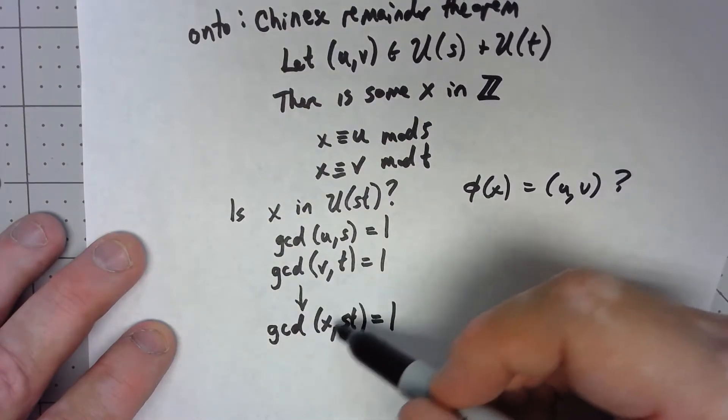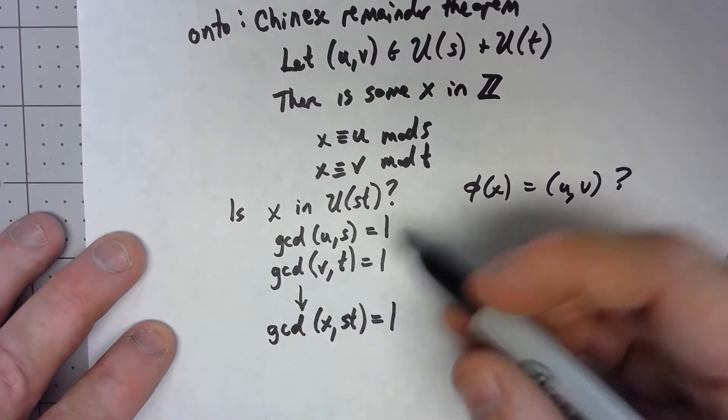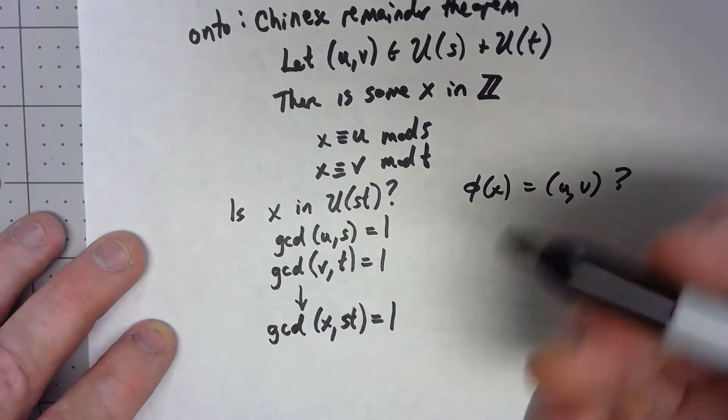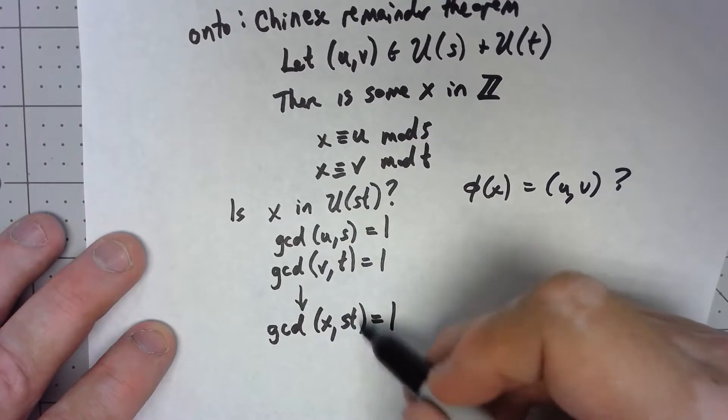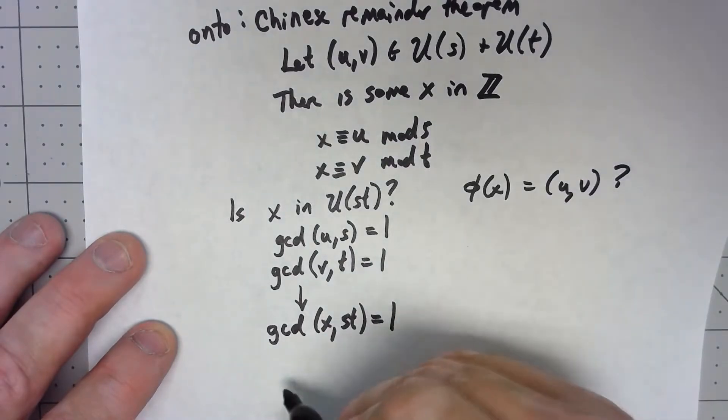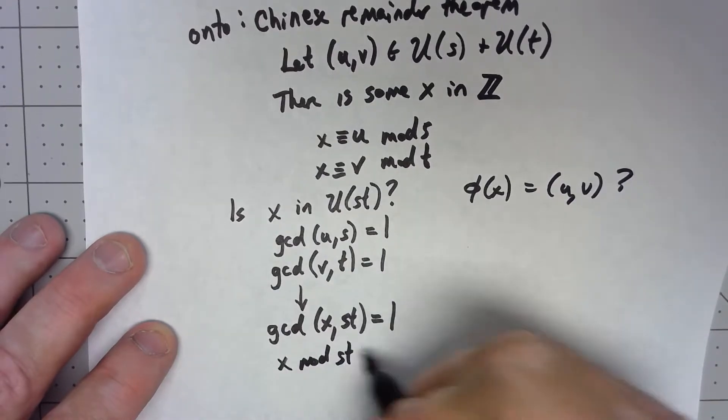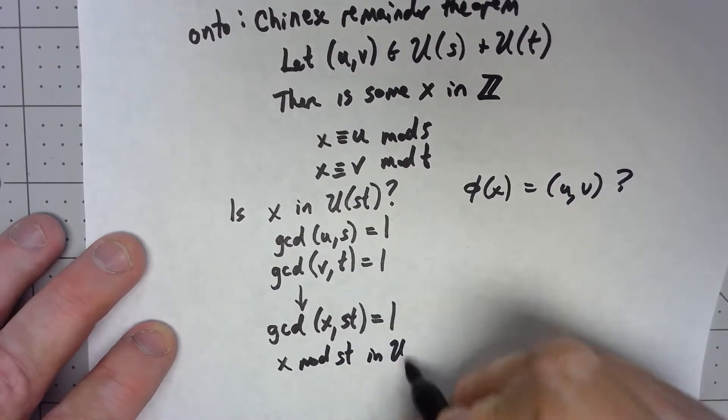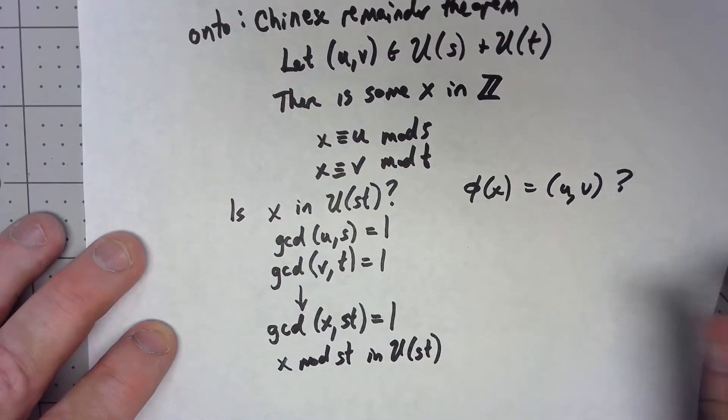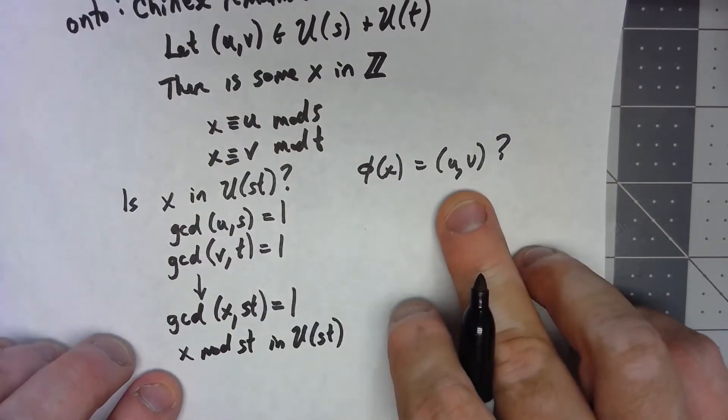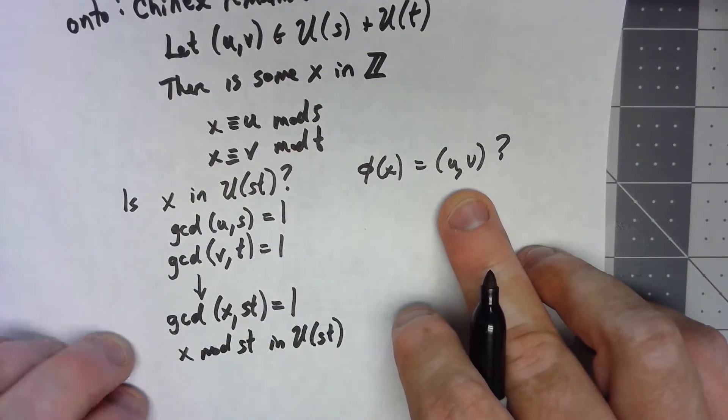So if we just take x mod st, then this thing follows from everything else. We're definitely in the U(st).